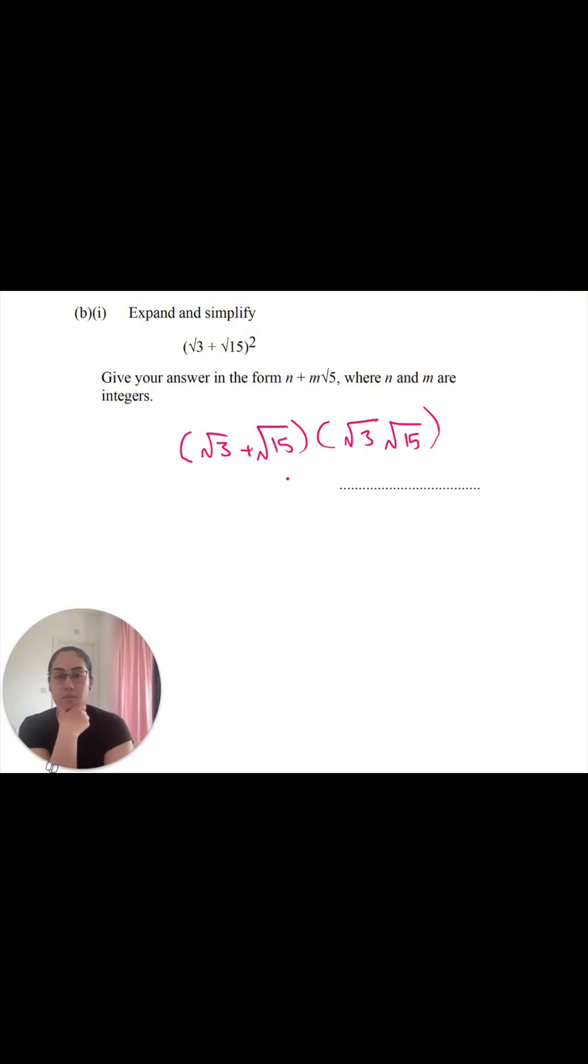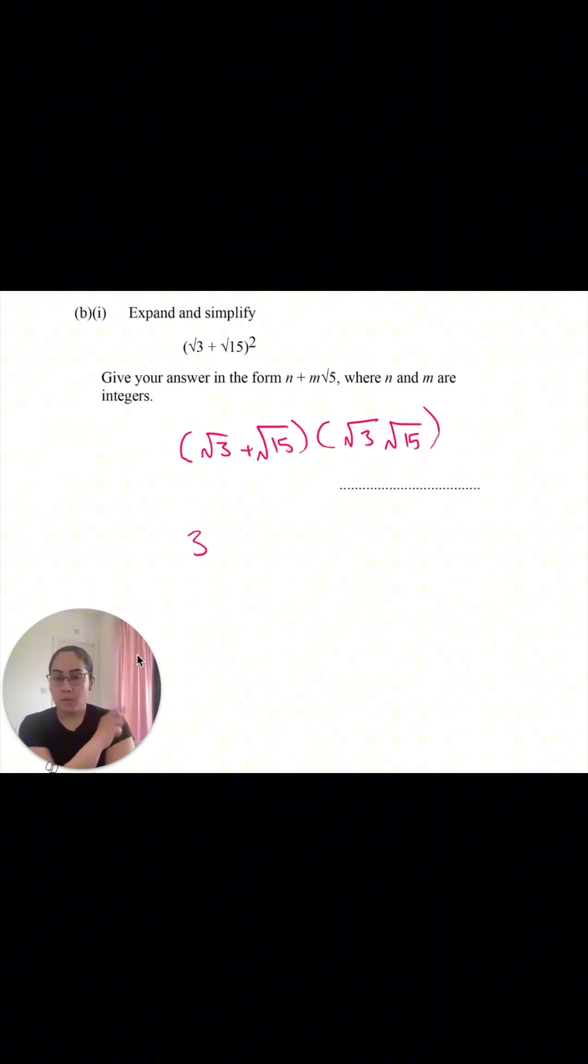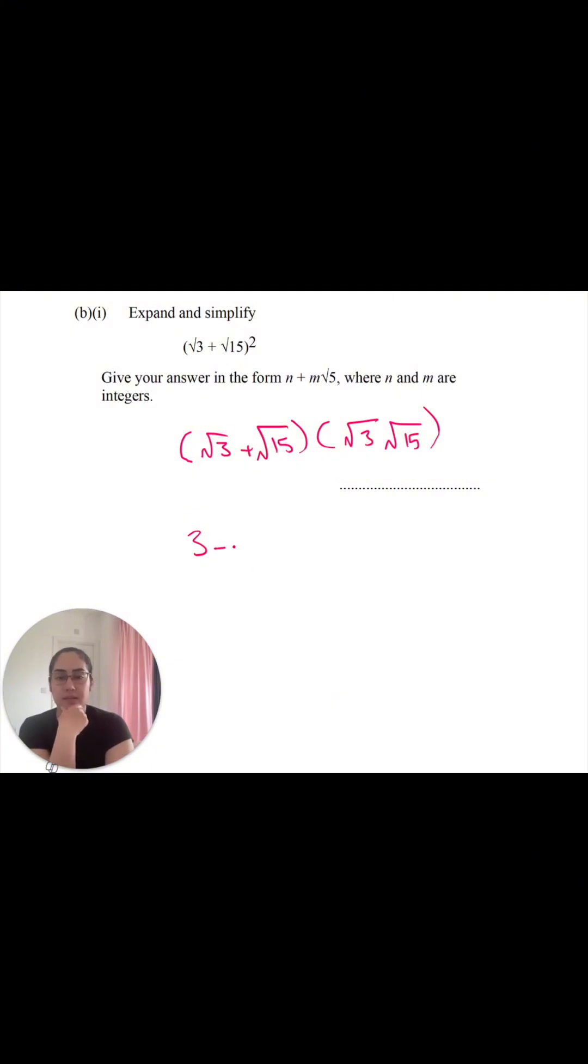We're going to expand the brackets. We're going to multiply everything in the first bracket with everything in the second bracket. So root 3 times root 3 gives us 3. When you multiply two square roots with the same number, you're basically cancelling out the square root. So root 3 times root 3 is 3.